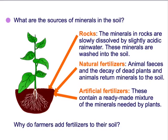So where do these minerals actually come from? One of the main areas is rocks. Minerals within the rocks can be dissolved by the slightly acidic rainwater, which means they dissolve into the water and can then be absorbed by the roots.